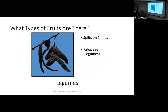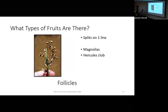Our three dry dehiscent fruits all split along natural lines. First is a legume — like pea pods and bean pods — splitting on exactly two lines, usually at the edges. Legumes are specific to one family: the Fabaceae. A follicle is a fruit that splits along just one line of suture. On Hercules club, the small spherical fruit splits along one line covering half a circumference, and once open it looks a bit like Pac-Man. We only have a few examples: Hercules club and magnolias.